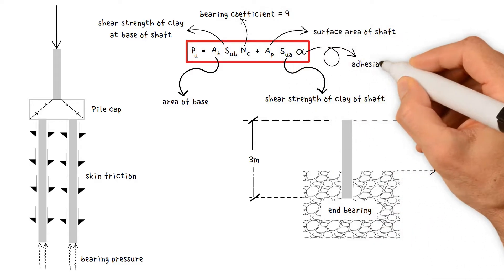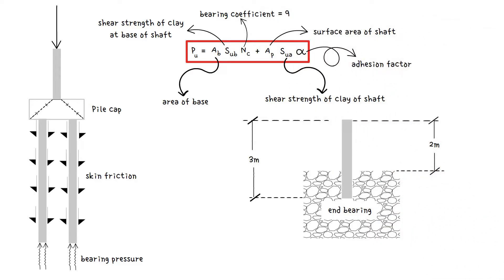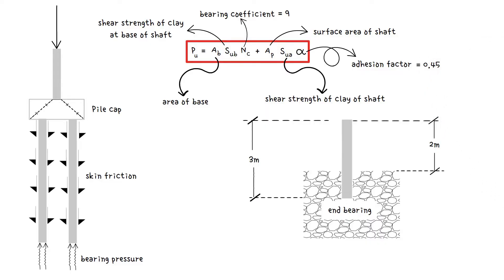Alpha is the adhesion factor; in the absence of data, 0.45 may be used. Tomlinson 2001, reference 10, provides a more comprehensive guide for piles in sandy and clay soils.